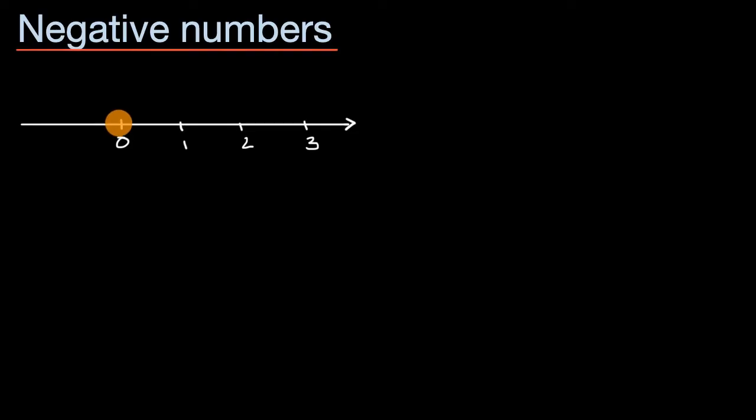So, for example, if I go one to the left on this number line, that would now get us to negative one. Positive one is one to the right, negative one is one to the left.